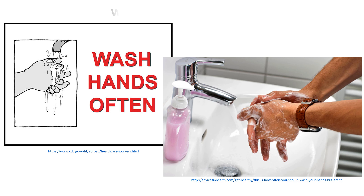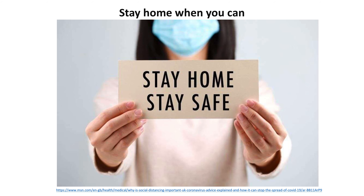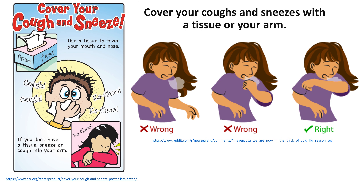To reduce your risk of getting sick, wash your hands often with soap and water for at least 20 seconds. If soap and water are not readily available, use a hand sanitizer that contains at least 60 percent alcohol. Cover all surfaces of your hands and rub them together until they feel dry. Avoid touching your eyes, nose, and mouth with unwashed hands. Avoid close contact with people who are sick. Put distance between yourself and other people — this is especially important for people who are at higher risk of getting very sick. Cover your mouth and nose with a tissue when you cough or sneeze, or use the inside of your elbow. Throw used tissues in the trash and immediately wash your hands with soap and water for at least 20 seconds.